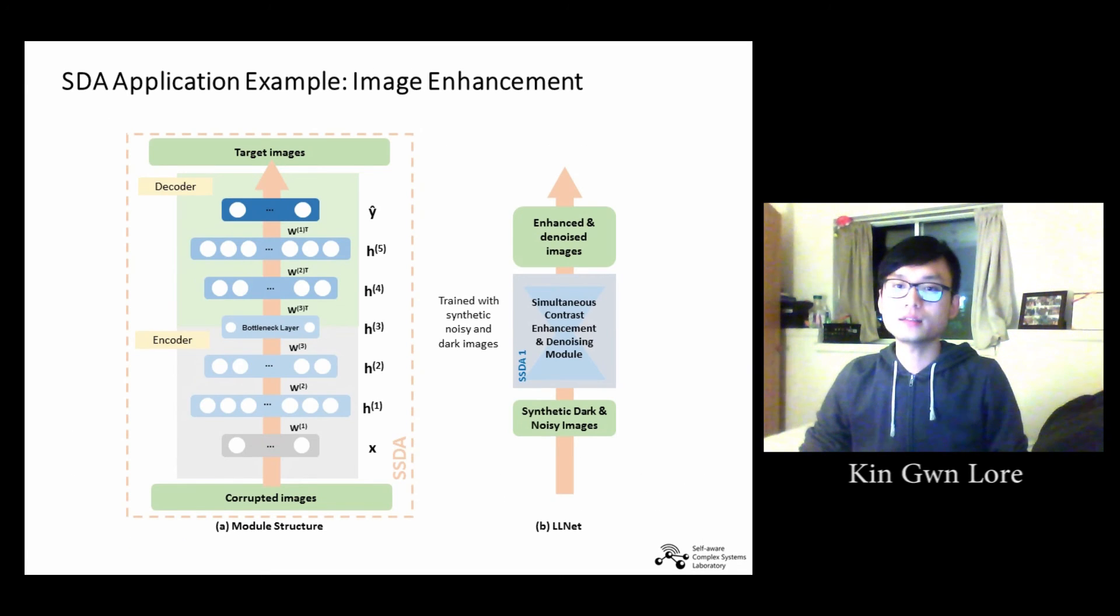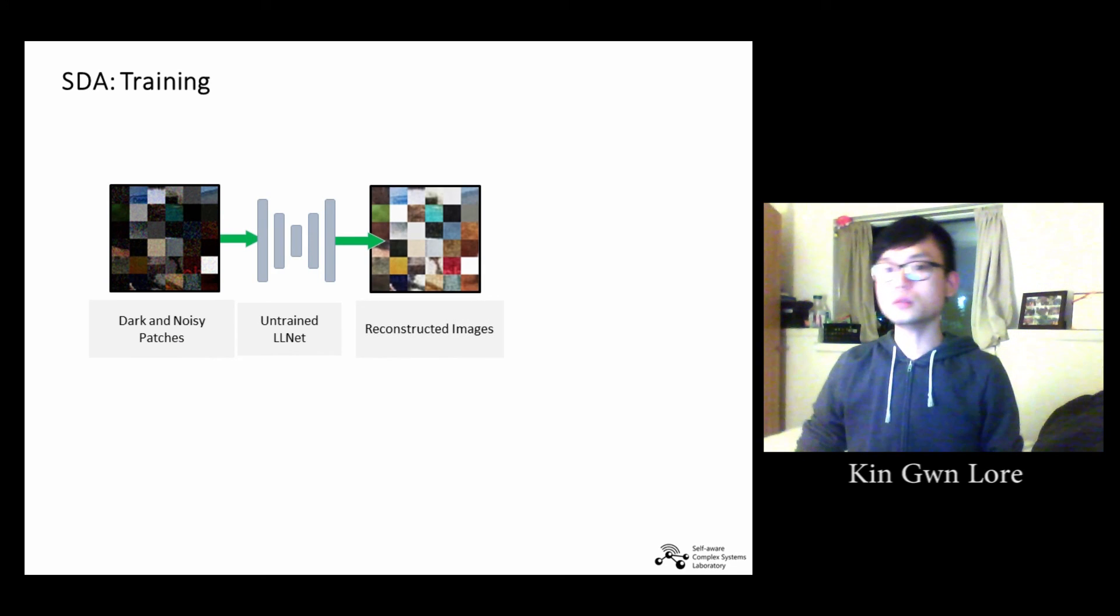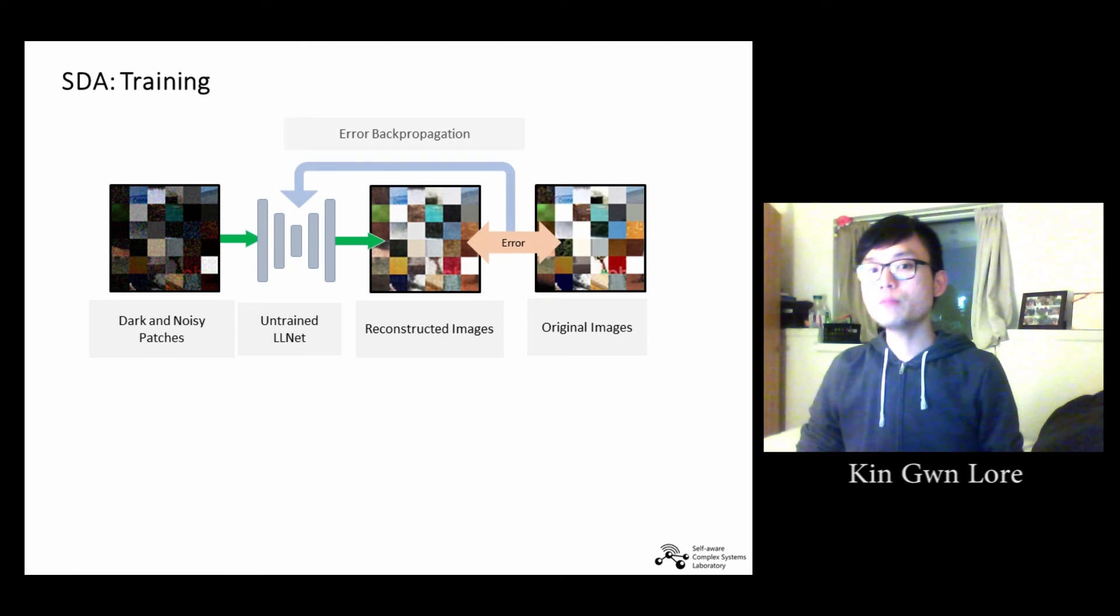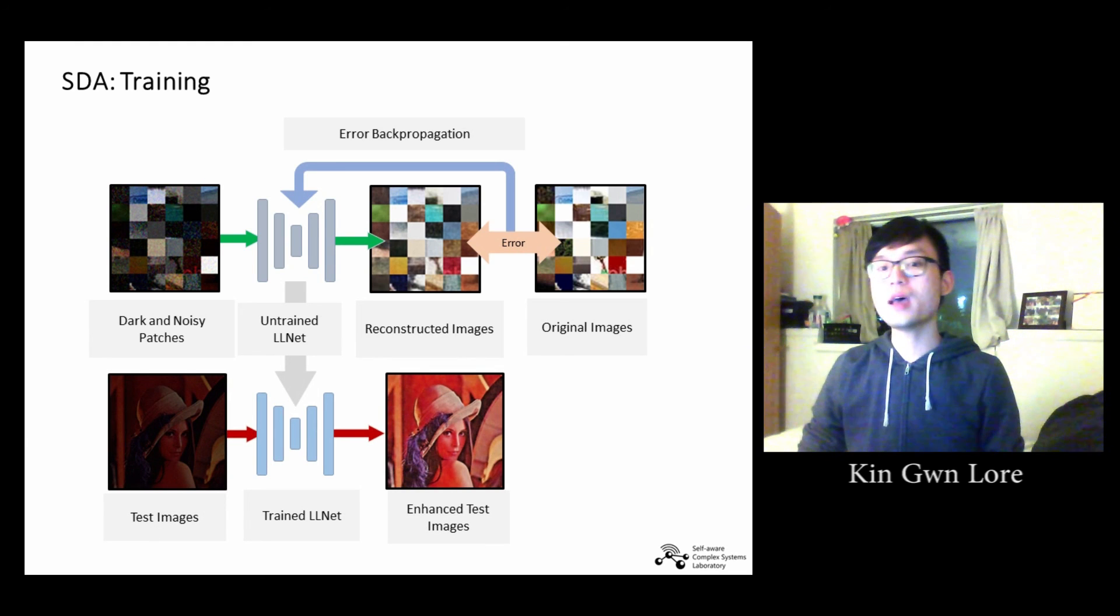In one of our works, we applied stacked denoising autoencoders in enhancing low-light images. The architecture that we use is similar to what we have discussed earlier, where the input is the low-light photographs and the output is the enhanced images. When training the model, we feed synthetically darkened and noise-added image patches into the model. The model will learn the ways to produce a reconstructed image, which will then be compared with the original images. The error is backpropagated to fine-tune the model parameters, and with enough iterations, we arrive at a trained model. Then we feed a low-light test image to obtain an enhanced test image.